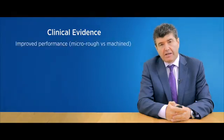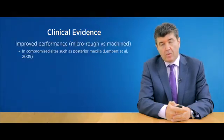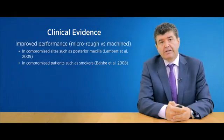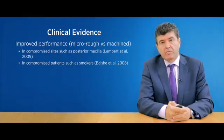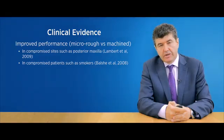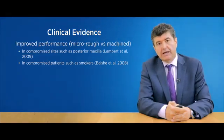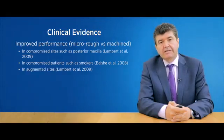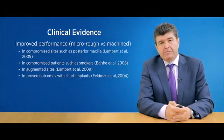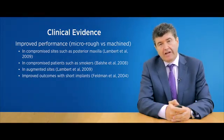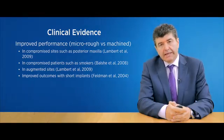There is good evidence suggesting that micro rough implants perform better in a variety of situations, such as compromised sites, such as the posterior maxilla, meaning sites with a lower level of mineralized bone. Furthermore, in compromised patients, such as smokers, and in augmented sites where bone regeneration has taken place.